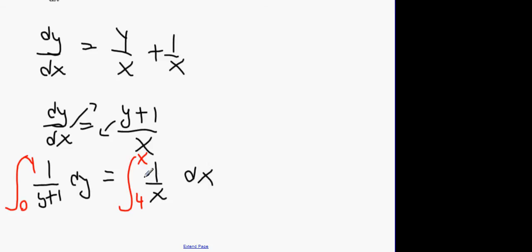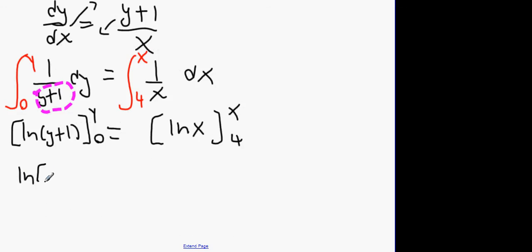We next have to do a substitution, or basically figure out what integral we're using. The one on the right is easy, it's LN x from x to 4. The one on the left however, we can use this part here. So we can say basically it's LN(y+1), close bracket, again, y to 0. Now we're going to have the following. We're going to have LN(y+1) minus LN 0. Oh sorry, LN 1 because it's LN(0+1). Equals LN x minus LN 4.